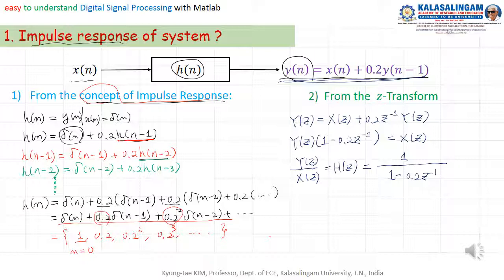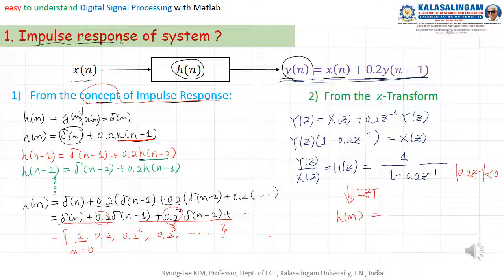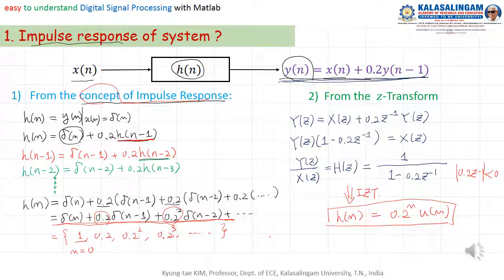Here we need some condition: 0.2 G to the power minus 1, its modulus is less than 1. Then, what we have to do is take the inverse G-transform. We can get h of n equal to 0.2 to the power of n times u(n). You can get the same result from the G-transform and from the direct impulse response method.